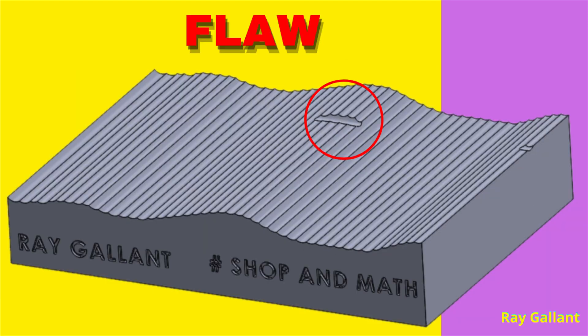A flaw is an irregularity that occurs in a surface due to cracks, blow holes, ridges, or scratches — basically anything that's not in the machining pattern. There are no finish symbols for flaws. A special note should be included on the drawing where no flaws are permitted.